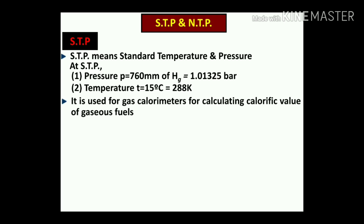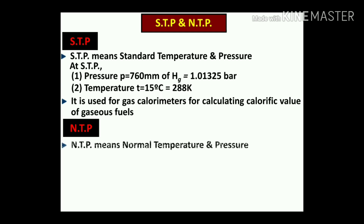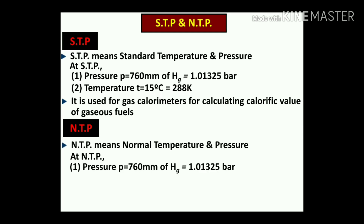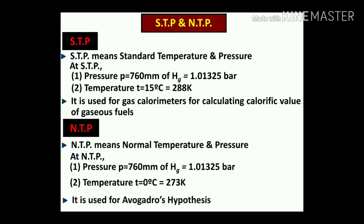STP is used for a gas calorimeter for calculating the calorific value of gaseous fuels. At NTP, pressure P equals 760 mm of Hg, which is equal to 1.01325 bar, and the temperature T is equal to 0 degrees centigrade, approximately 273 degrees Kelvin.